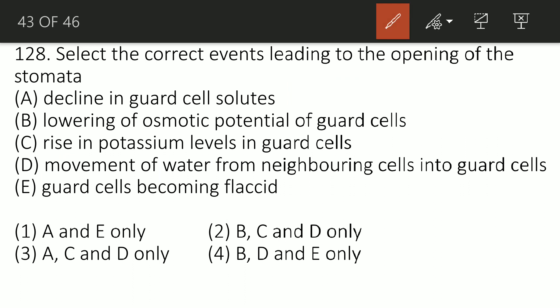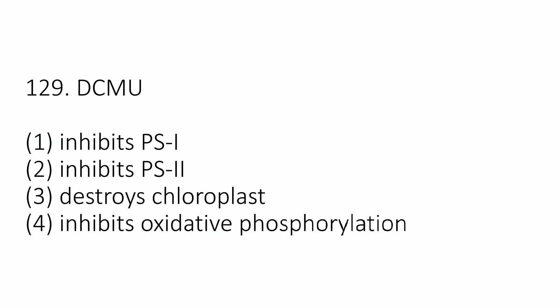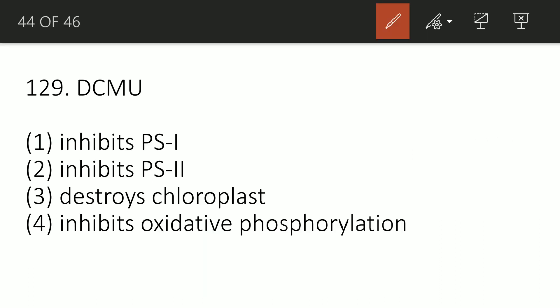Question 126: Select the correct events leading to the opening of stomata. The correct option is B, C, and D combined: B — lowering of osmotic potential of guard cells, C — rise in potassium level in guard cells, and D — movement of water from neighboring cells into the guard cells. Guard cells are the reason for the opening of stomata.